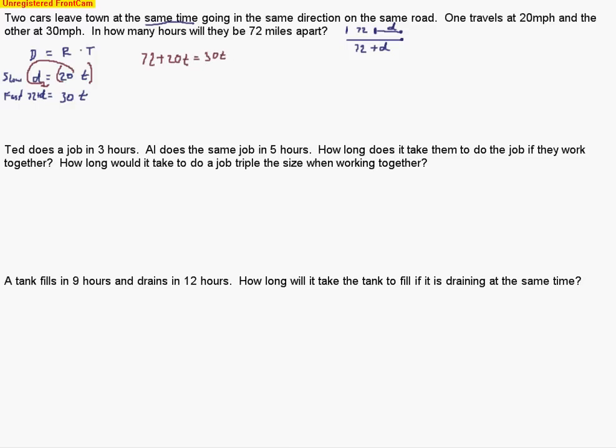So we subtract the 20t from both sides to isolate the unknown. We can rewrite this as 72 equals 10t. When we do that division, dividing by 10 on both sides, we end up with a decimal, and that's okay. 7 and 2 tenths is the time it takes those two cars to be 72 miles apart. So 7.2 hours would be our answer.